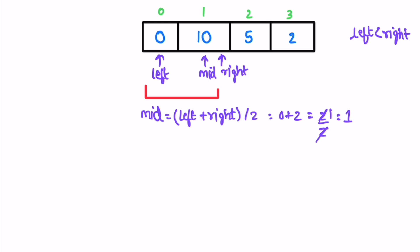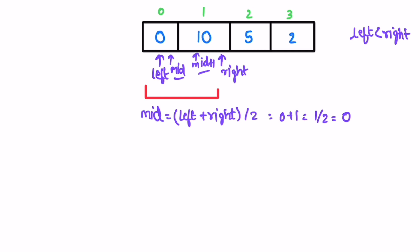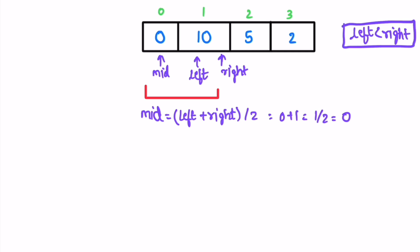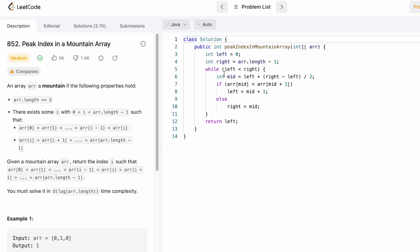We find mid again: left is zero, right is one, so mid equals zero. We check if arr[mid] is less than arr[mid+1] — zero is less than ten, so yes. When this happens we increment left. In the next iteration left equals one and right equals one, so the condition left < right fails and we end the iteration, returning whatever is at left.